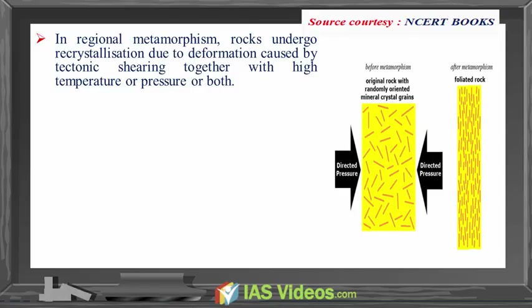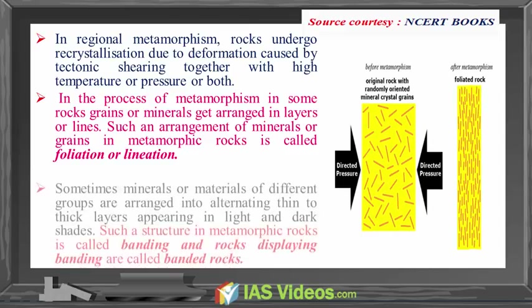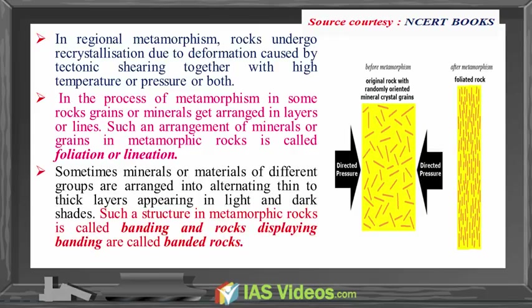In regional metamorphism, rocks undergo recrystallization due to deformation caused by tectonic shearing together with high temperature or pressure or both. In the process of metamorphism, in some rocks, grains or minerals get arranged in layers or lines. Such an arrangement of minerals or grains in metamorphic rocks is called foliation or lineation. Sometimes minerals or materials of different groups are arranged into alternating thin to thick layers appearing in light and dark shades. Such a structure in metamorphic rocks is called banding, and rocks displaying banding are called banded rocks.